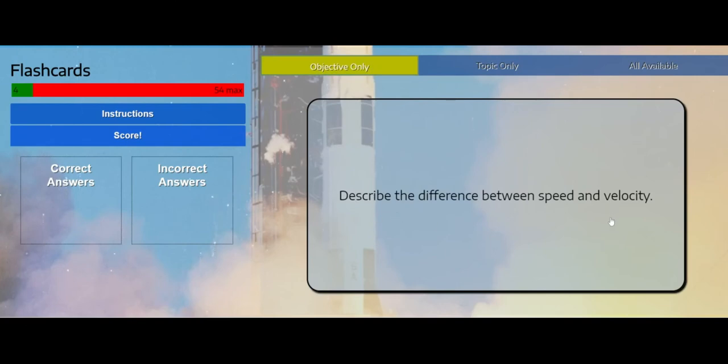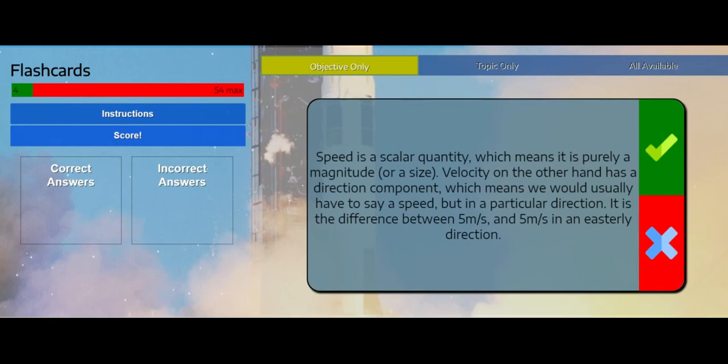Describe the difference between speed and velocity is my first question. So I'm going to think to myself - I think the difference is that speed is a scalar and velocity is a vector. So I'll click this, and then it gives me the answer.